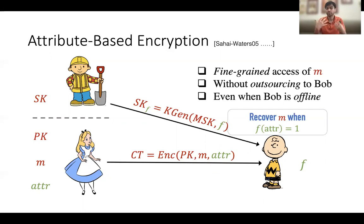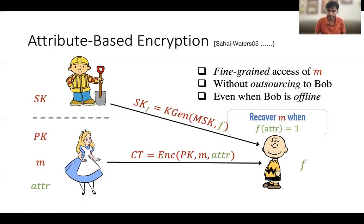While this is great, it's very inefficient and suboptimal. Basically, attribute-based encryption provides fine-grained access over encrypted data. And it solves this problem without outsourcing the computation to Bob, and even lets Charlie perform this computation when Bob is offline.